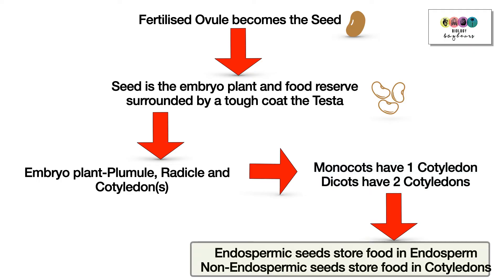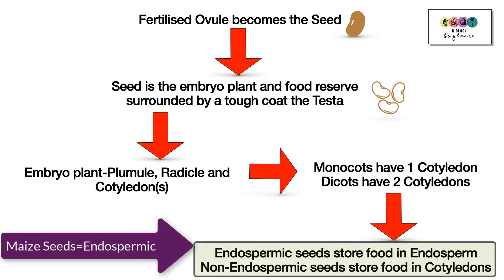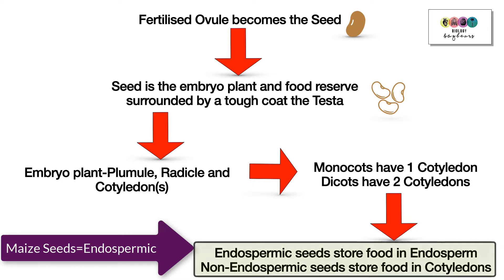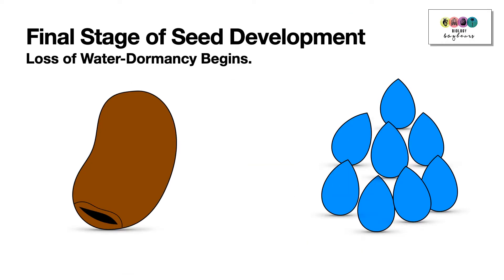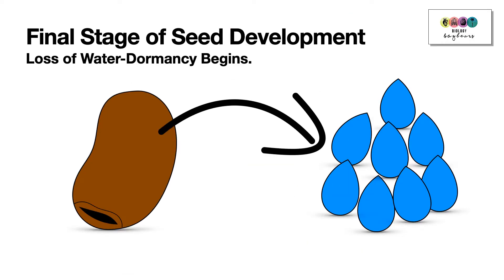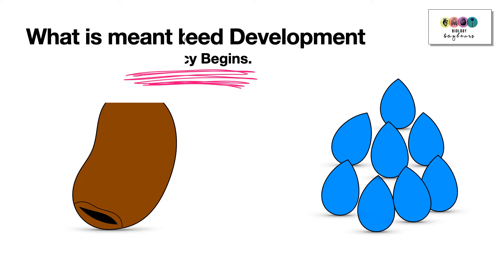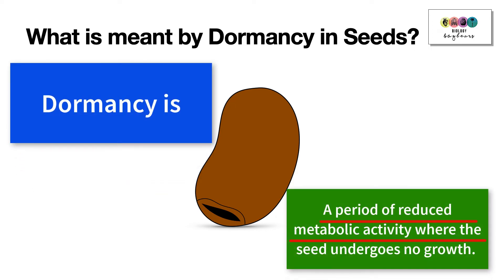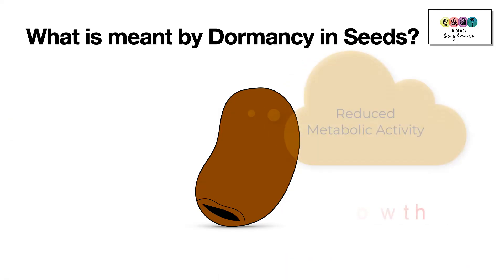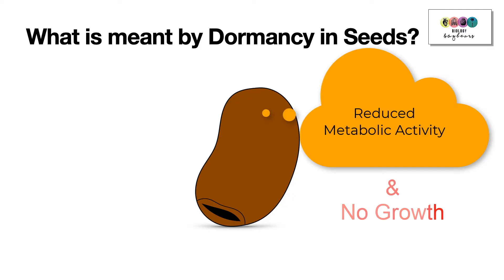Some seeds are endospermic — they have an endosperm at maturity where the food is stored. Some seeds are non-endospermic; their endosperm has been absorbed and the food is stored in the cotyledons. In the final stages of seed development, the seed loses most of its water content, commencing a period known as dormancy — a period of reduced metabolic activity where the seed undergoes no growth. It's almost as if the seed is hibernating, waiting for perfect conditions before it can germinate.